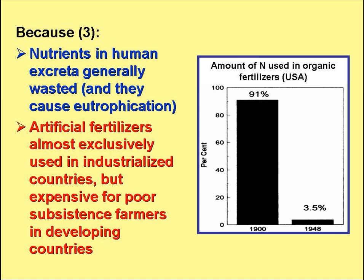In industrialised countries, farmers almost exclusively use artificial fertilisers, but these are commonly too expensive for farmers in developing countries unless they are massively subsidised by the government. The chart on the right shows how artificial fertilisers have taken over in the United States. A hundred years ago, just over 90% of the nitrogen applied to crops came from organic fertilisers — manures, for example. But by 1940, this had dropped to 3.5%.